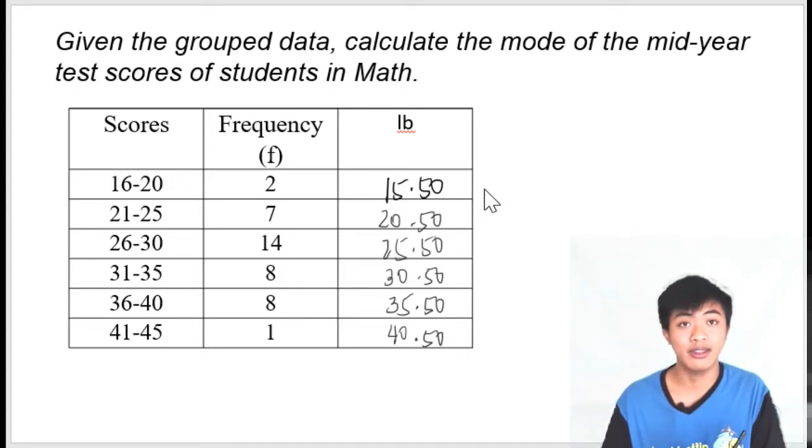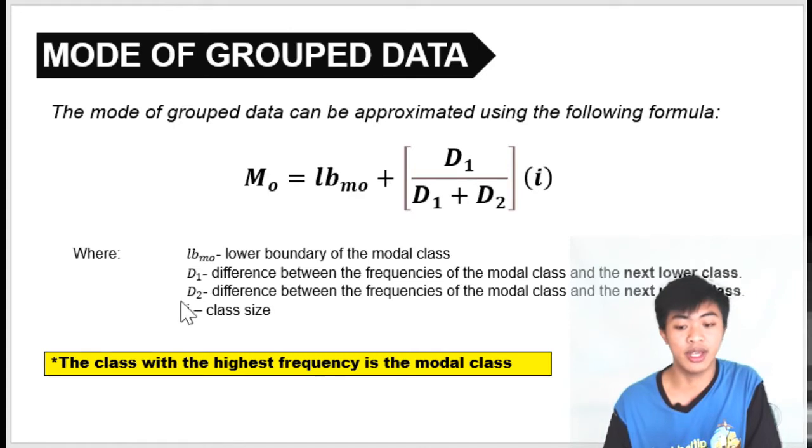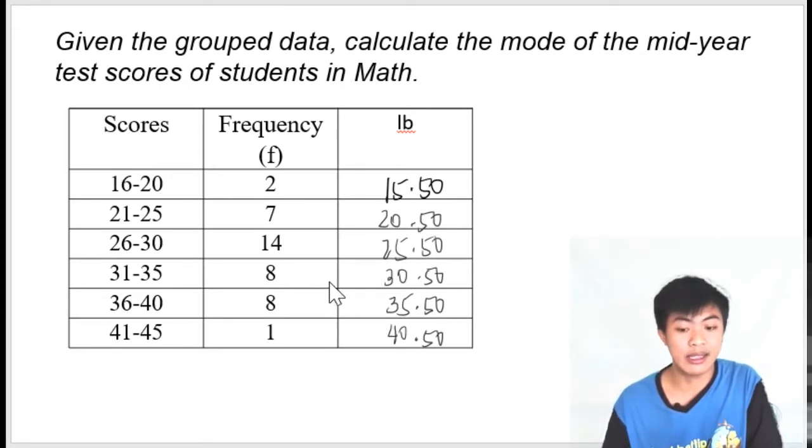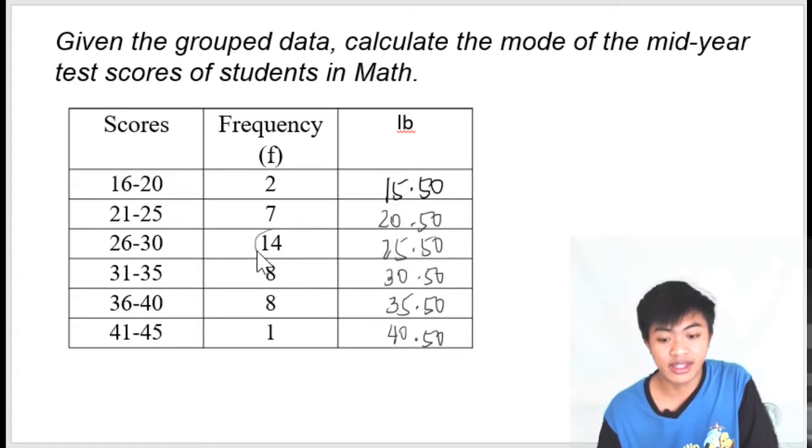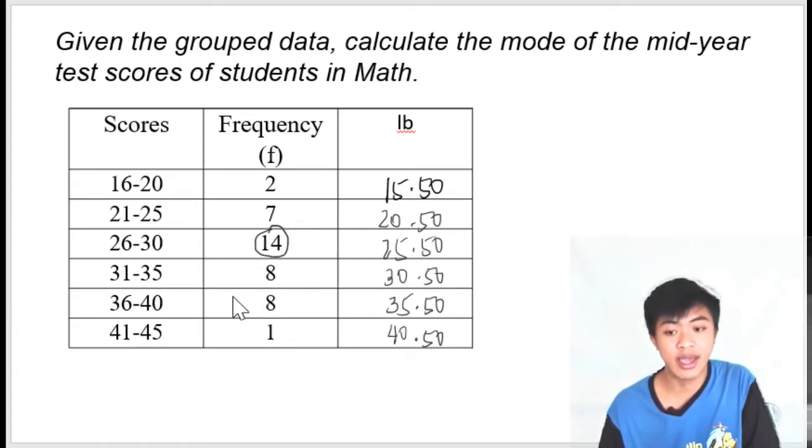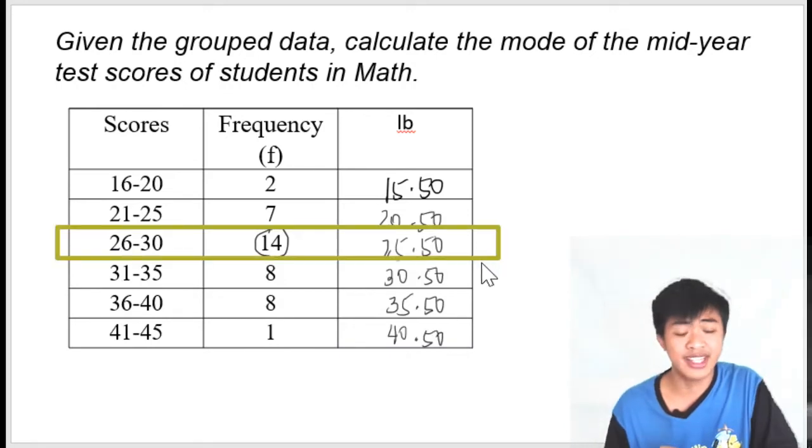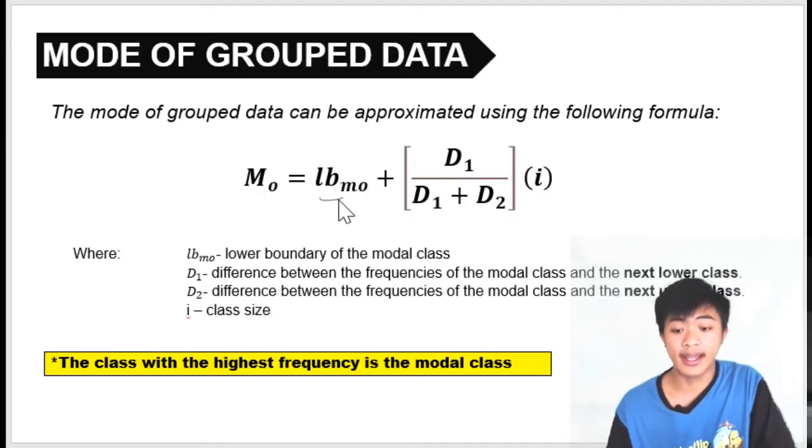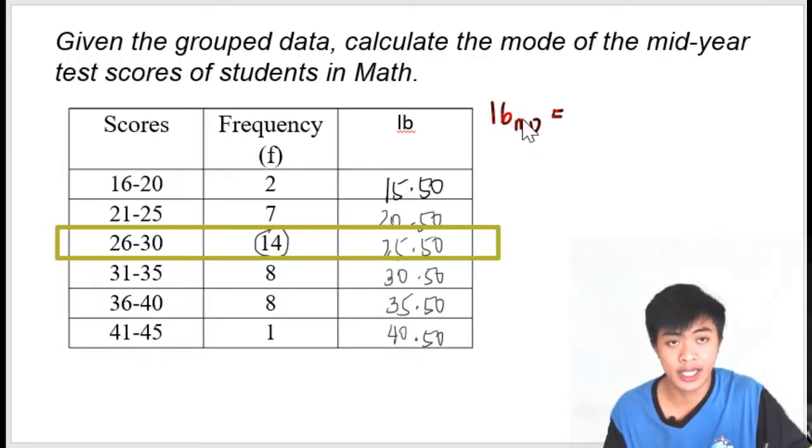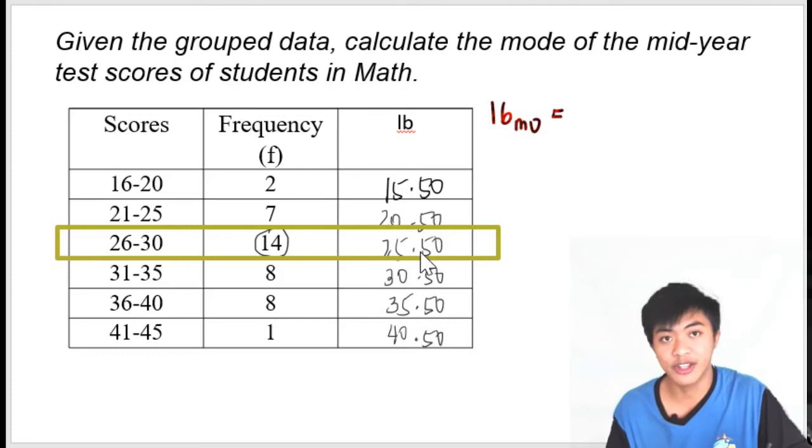After completing the lower boundary column, we identify the modal class. Going back to the formula, the class with the highest frequency is the modal class. Which class has the highest frequency? We look into the frequency column and find the largest value, which is obviously 14. So the modal class is this one. After identifying the modal class, we identify the components of the formula. What is the lower boundary of the modal class? The lower boundary is 25.50.